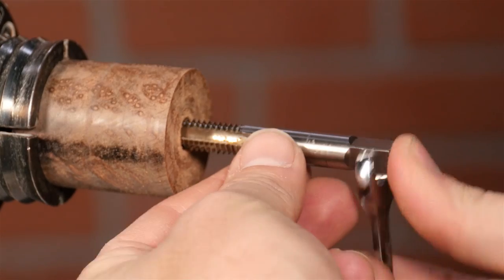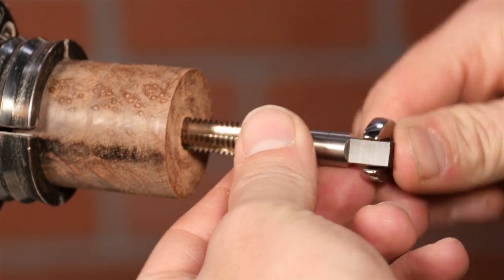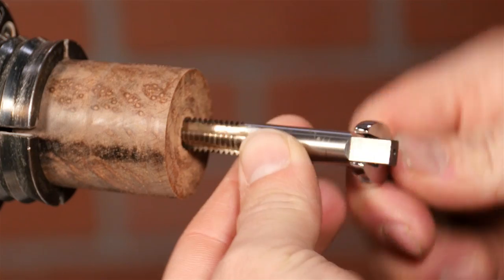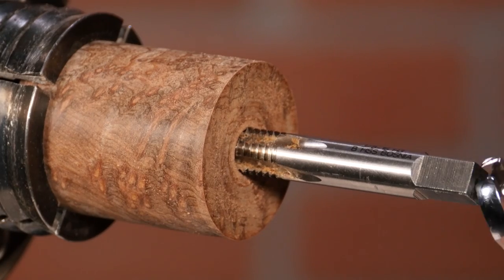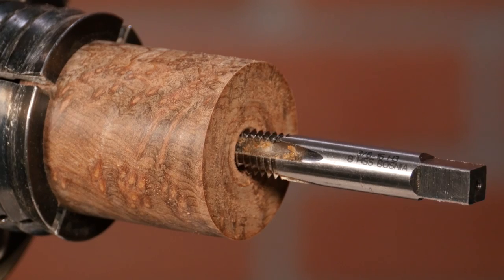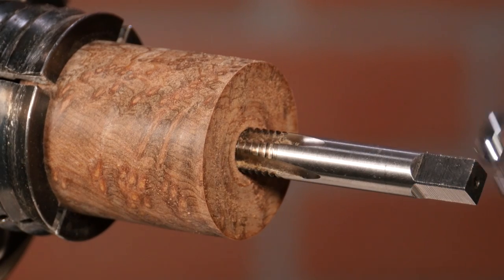The trick to tapping threads is to advance a turn, then back out partway, slowly and steadily cutting the threads. If you go too fast or don't back out, you're likely to strip them out. Keep going until the tap bottoms out.